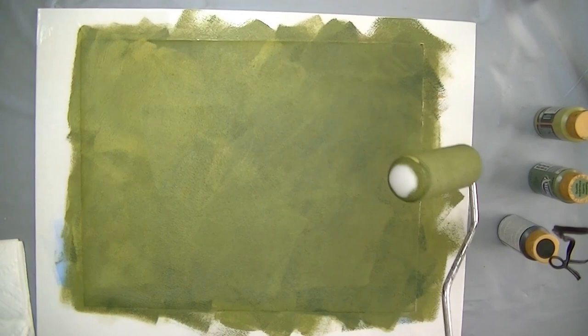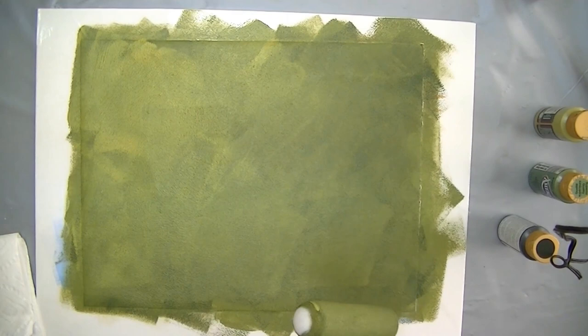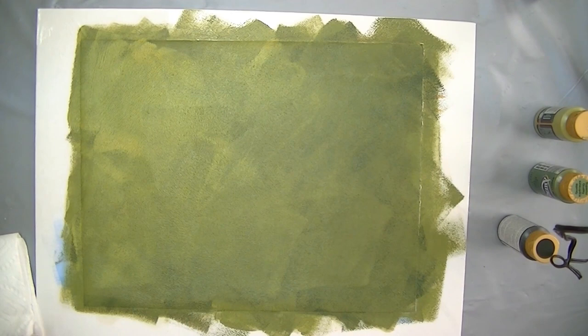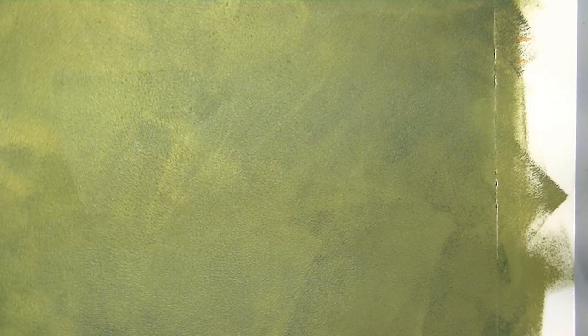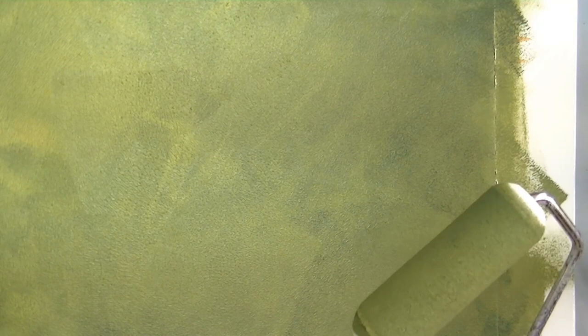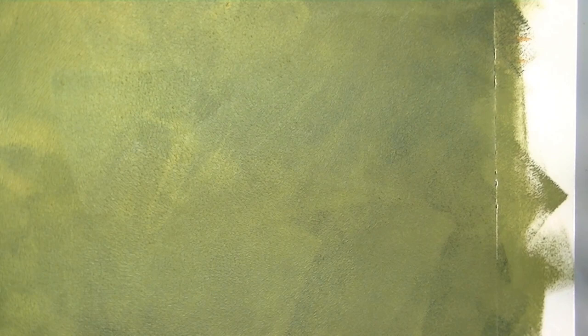Now the secret is to stop before I think I should. So I think I'm going to stop right there. You can see that we have a nicely mottled background. And I'll tighten in a little bit for you. You can see there's still some marks and streaks in the background. If I continue to roll it's going to just be one color. So I want to stop before I think I should.